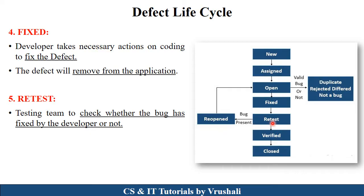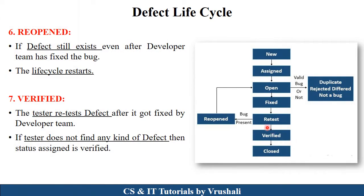The next state is retest. Here, the testing team checks whether a particular defect has been fixed by the developer or not. If the defect is still present in the project, it is sent back to the developer, who performs the open and fix operations again. If the defect has been removed, they move to the verified state. In the verified state, the tester retests the fixed defect and ensures that no defects remain in the project.